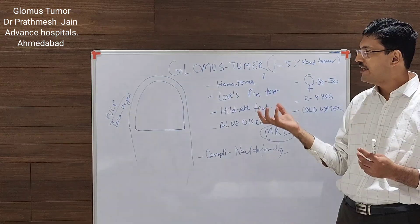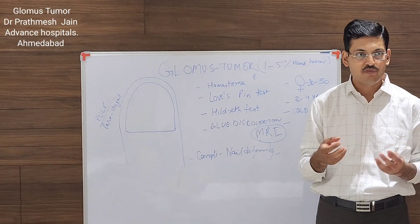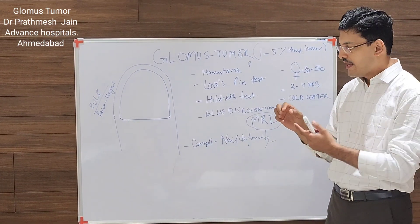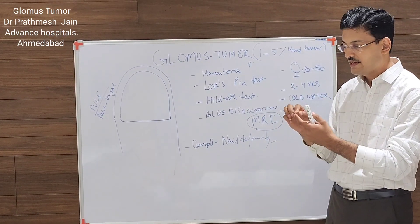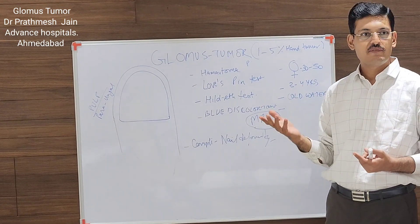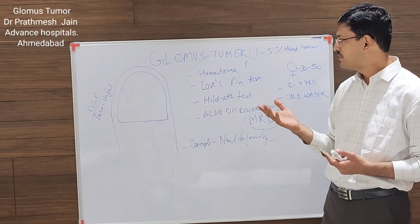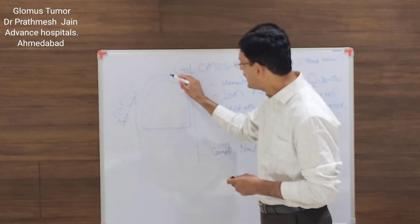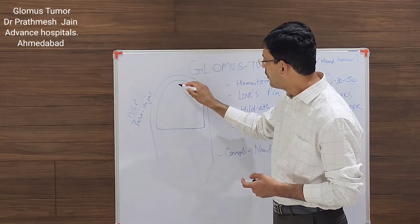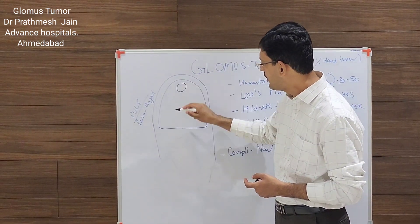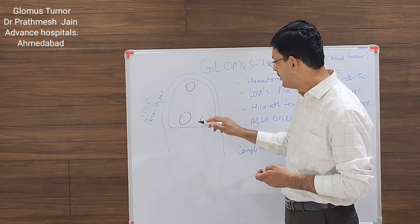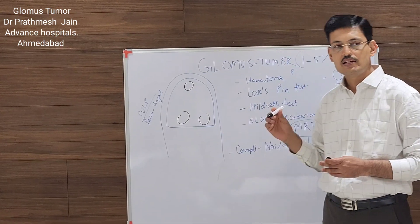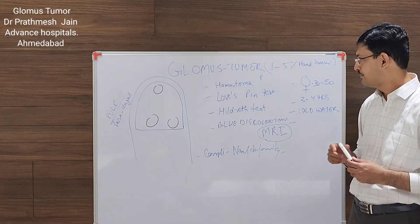The area where the patient is doing work — if anything touches there, the patient will scream with pain. This can be in the pulp on the palmar aspect or in the region of the nail vicinity, which is the most common location.